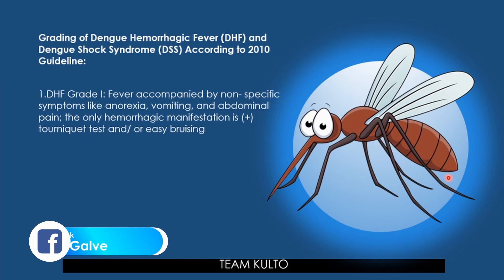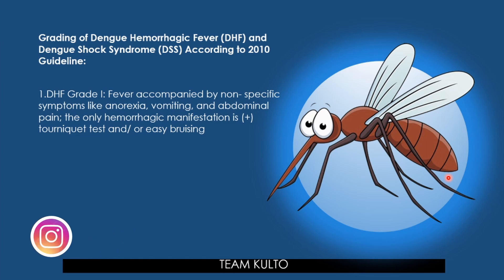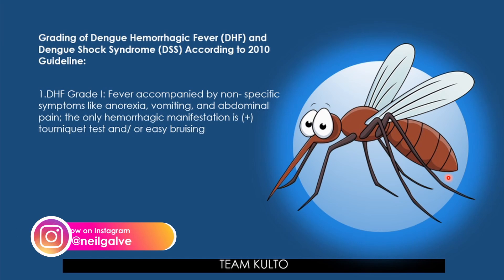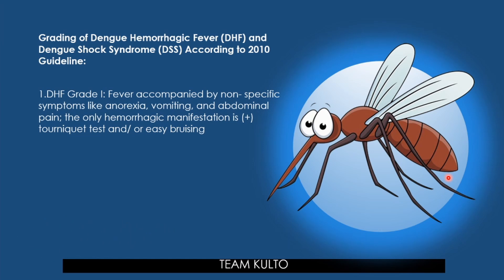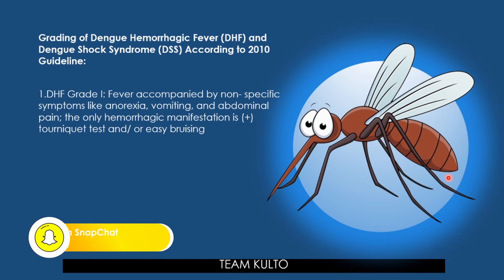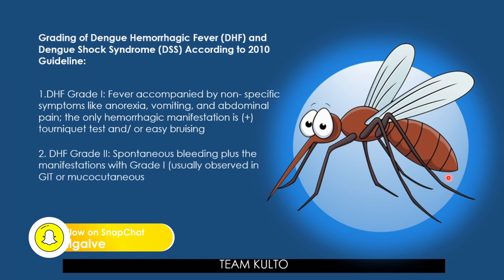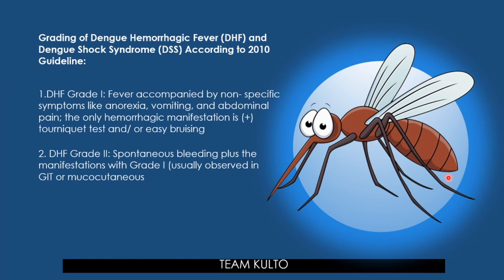The tourniquet test determines capillary fragility — a clinical diagnostic method to assess a patient's hemorrhagic tendency. It is performed by inflating a blood pressure cuff on the upper arm to midway between diastolic and systolic blood pressure for five minutes. Results are positive if more than 20 petechiae per square inch are observed on the skin under pressure.